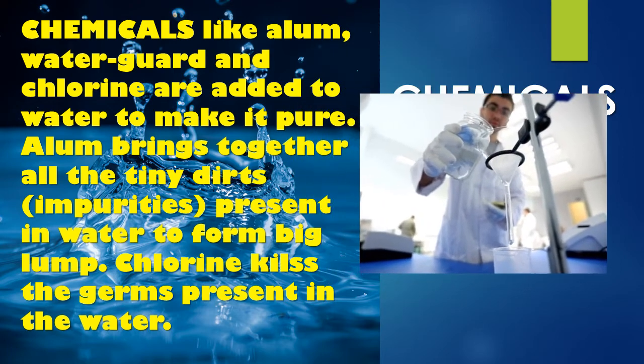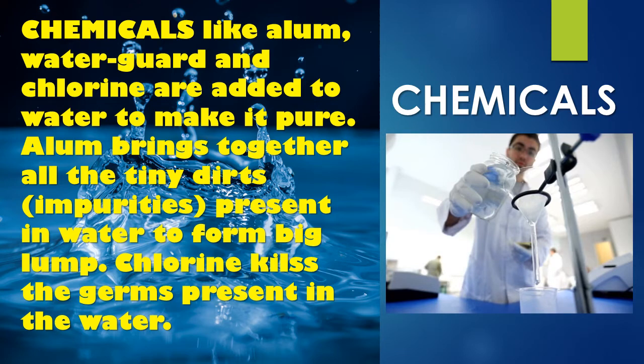Chlorine kills the germs that are present in the water. While alum brings together all those tiny deposits — you know, those tiny deposits are called impurities. Alum brings those impurities together and causes them to form a big lump. Then chlorine kills the germs present in the water. So if you want to purify your water, the chemicals you can use are water guard, chlorine, and alum.